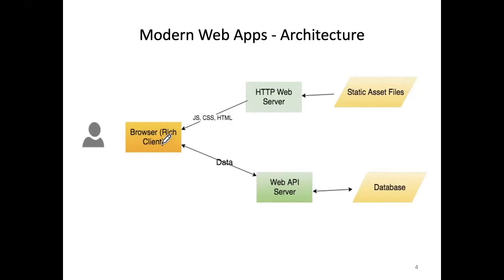Even though it changes the URL address in the browser, it doesn't necessarily communicate with any server — which is an unusual thing if you're coming from a static website world. What it may do is talk to the lower server, the web API server. The only purpose of communicating with that server is to ask it for some data, which will probably come from the database. The JavaScript code in the browser will then stitch that data into what the user sees on the screen. The browser is dynamically generating what the user sees, and it's that JavaScript code that we will spend the first half of this module developing.